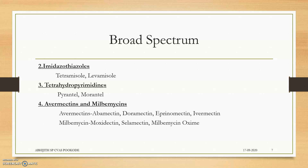The fourth broad spectrum group is avermectins and milbemycins. Avermectins include abamectin, doramectin, eprinomectin, and the very famous ivermectin, which is used to treat many ectoparasites and endoparasites. Milbemycins include moxidectin, selamectin, and milbemycin oxime. Moxidectin and selamectin differ from ivermectin.